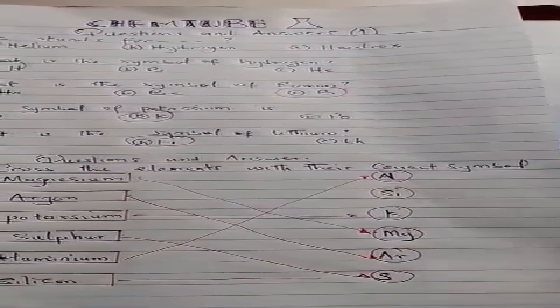So there you have it. Those are the mnemonics for the first 20 elements. You can watch the video, put it on repeat and keep on learning. Here now we have some questions and answers you can use to memorize the first 20 elements.